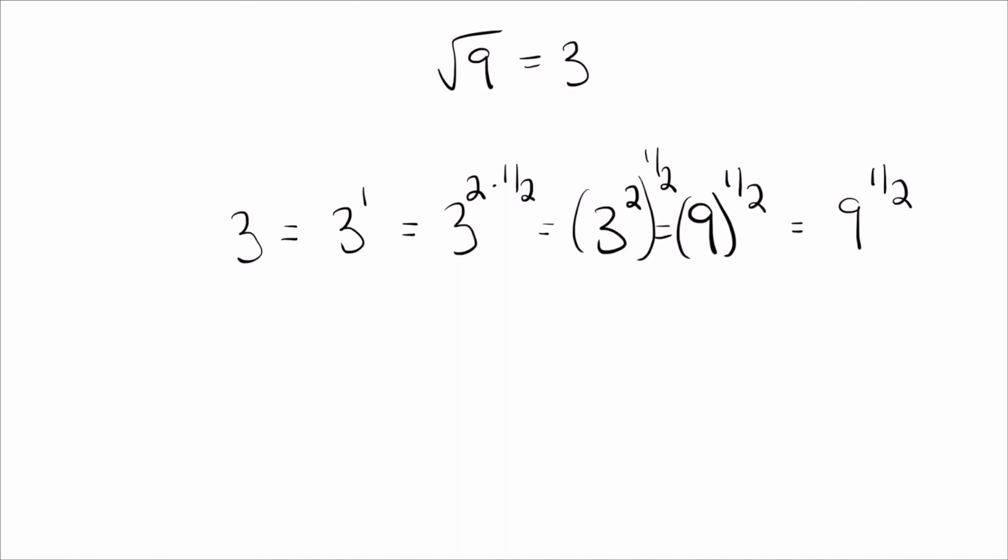So we're almost done. But what we have left is if we look up top now, we see that three is the square root of nine. In other words, the square root of nine is just another way of writing three. So I can write equals square root of nine. And there we go.